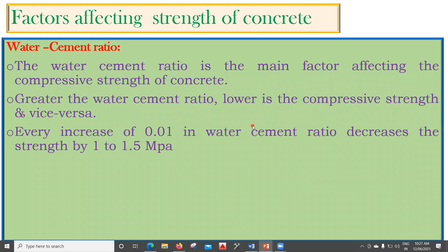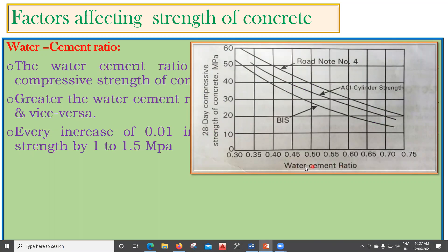Looking at the graph, the x-axis shows water-cement ratio — an independent quantity — and the y-axis shows compressive strength in newton per mm² (MPa) — a dependent quantity, since strength depends on water-cement ratio. The graph shows values from 0.30 to 0.55 on the x-axis and 10 to 60 MPa on the y-axis.